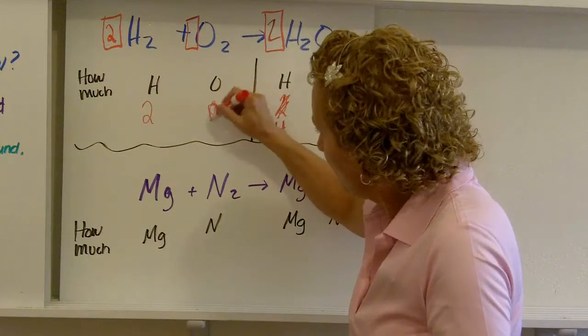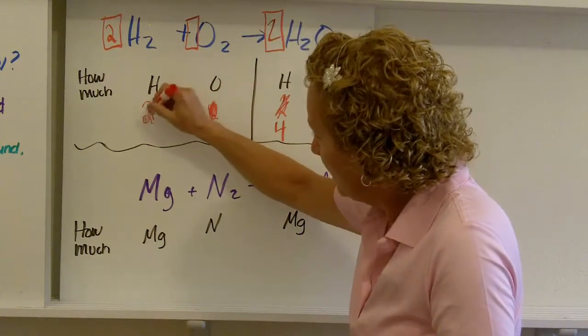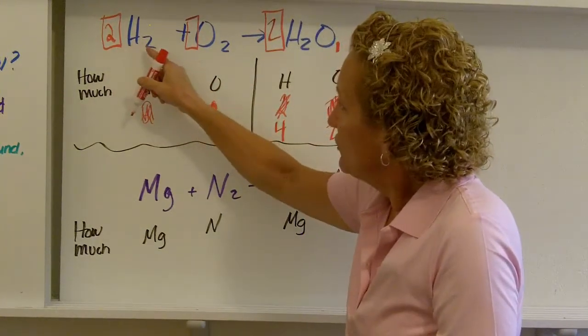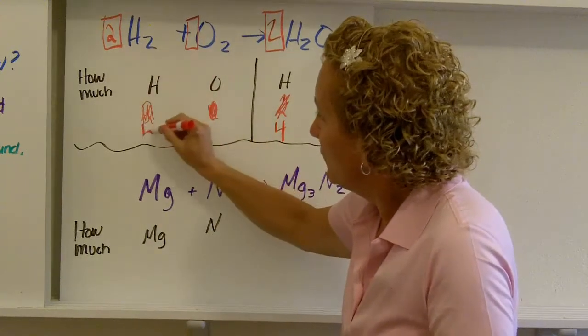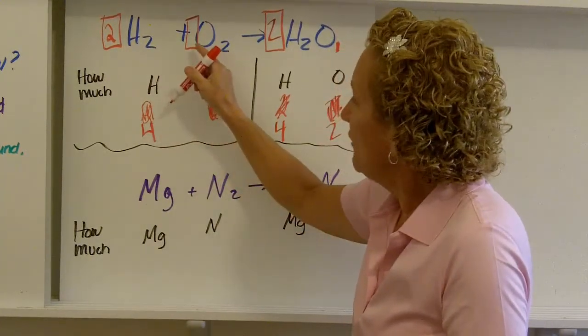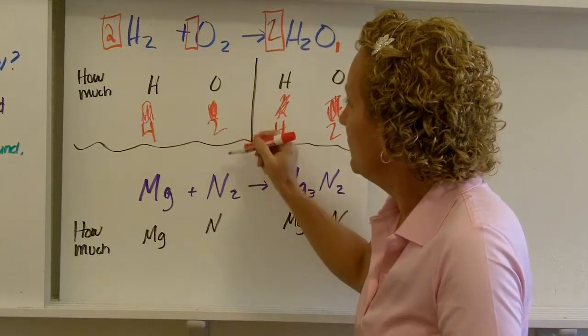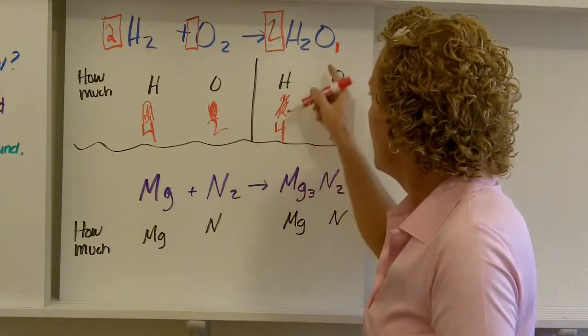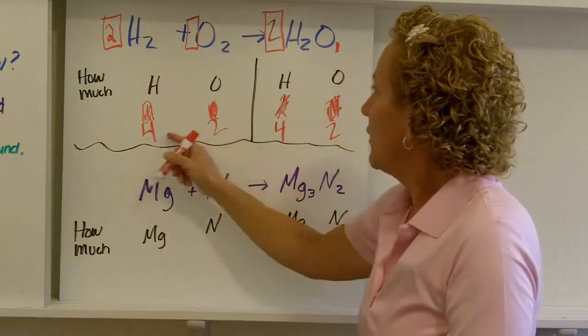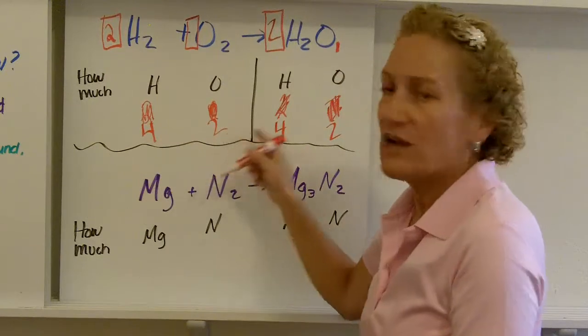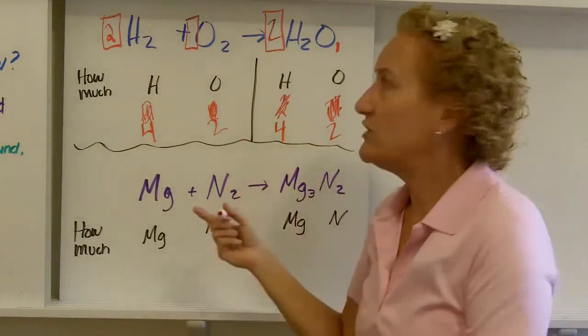So again, now we have to get rid of these because we changed something. How much hydrogen do I have? Two times two is four. How much oxygen do I have? One times two is two. And here I have four and there I have two. Four hydrogens, four hydrogens, two oxygens, two oxygens. My equation is balanced.